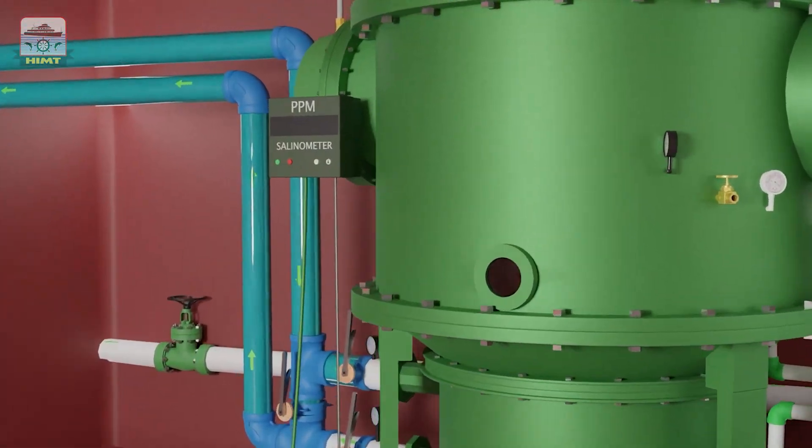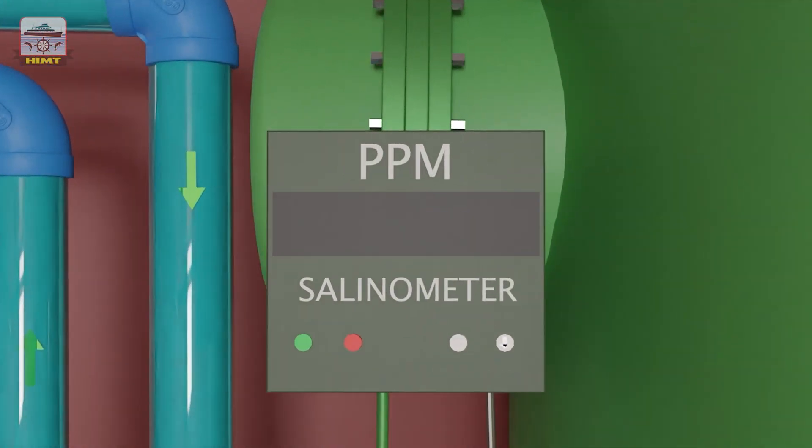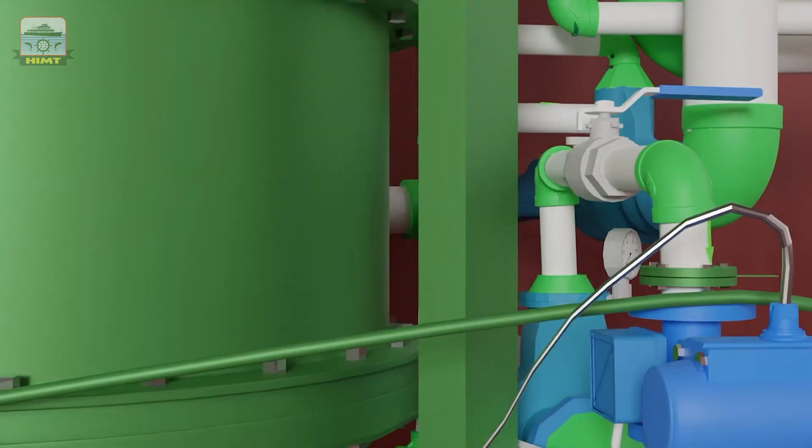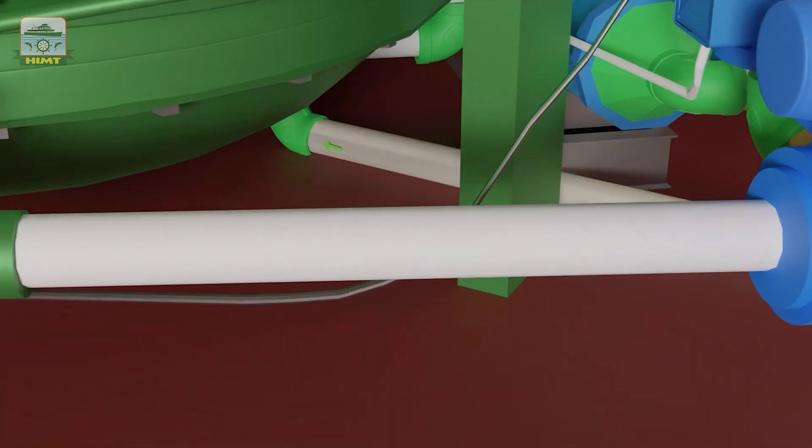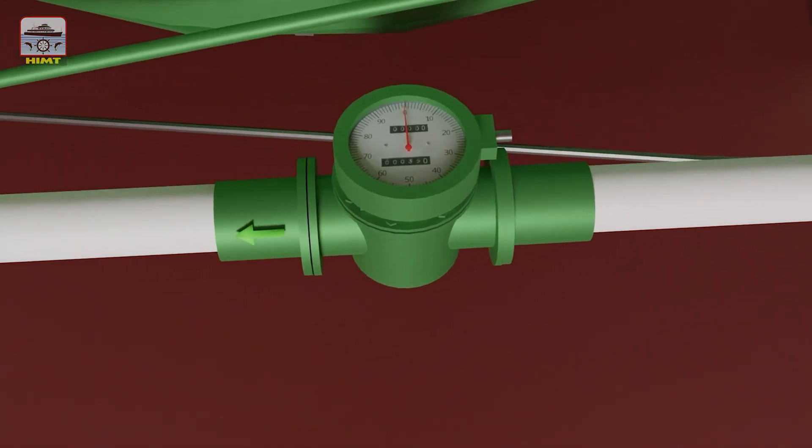Next we have a salinometer to test the salinity of the water produced. A three-way valve enables versatile control over the water flow, allowing for efficient routing depending upon the salinity level as required during operation, either to a fresh water storage tank or to fresh water generator shell. A flow meter is also installed to accurately measure the quantity of fresh water generated.